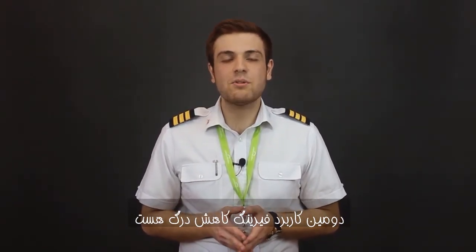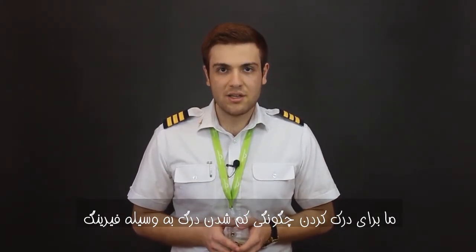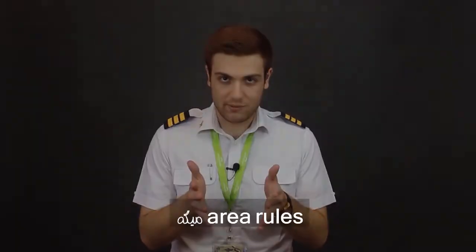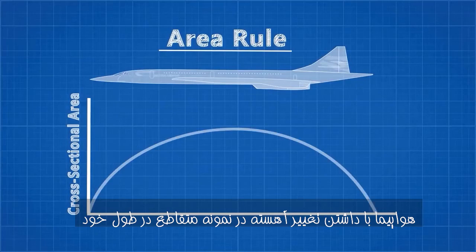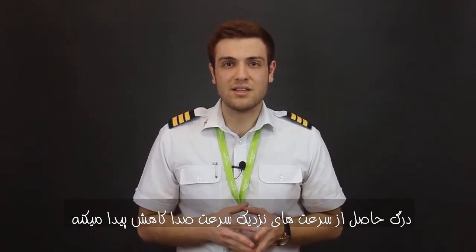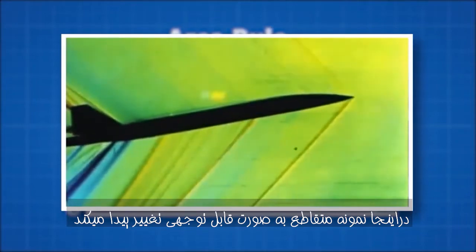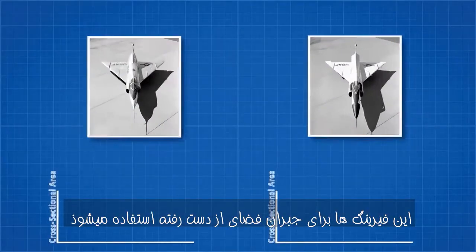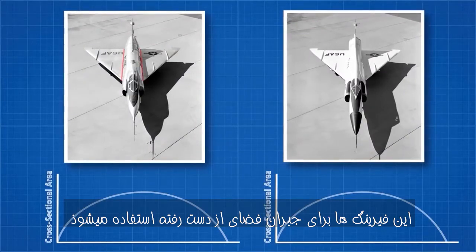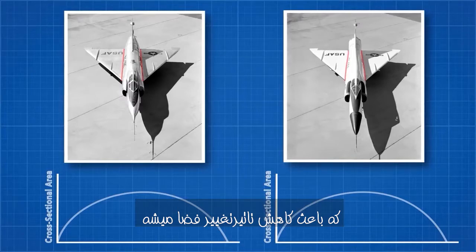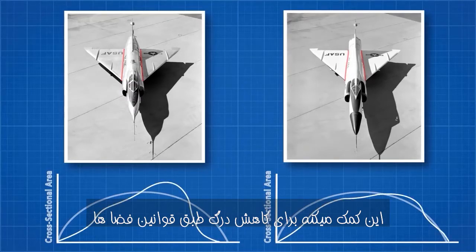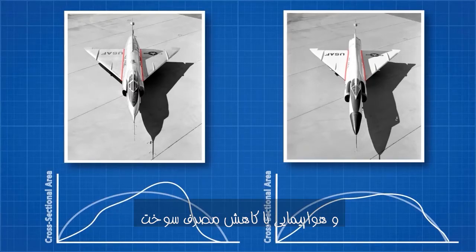The second purpose of the fairing is to reduce drag, which means reducing fuel consumption. To understand how fairings reduce drag, we need to understand area rules. Area rules state that if an aircraft has a smooth cross-sectional area change along its body, the drag at near-sonic speeds will be reduced. This rule applies to wings as well. As the wing tapers toward the trailing edge, there is a noticeable change in cross-sectional area. Fairings are implanted to compensate for the lost area, elevating the effect of the area change again, helping to reduce drag and making the aircraft more fuel efficient.